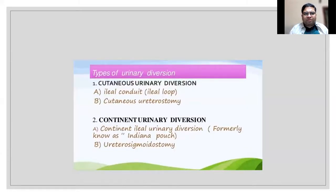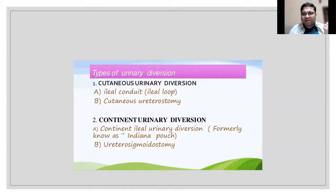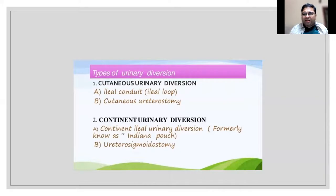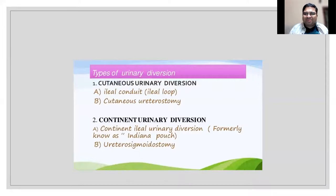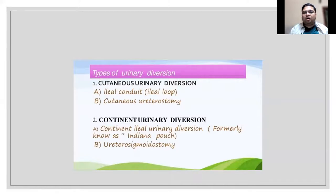Types of urinary diversion: one is cutaneous and incontinent - cutaneous ureterostomy or ileal conduit. Then you have continent urinary diversion with fancy names like Indiana pouch. These are continent catheterizable stomas. When I started my residency, I was exposed to urinary diversions early on.